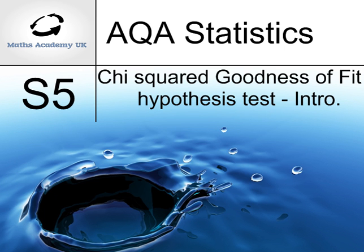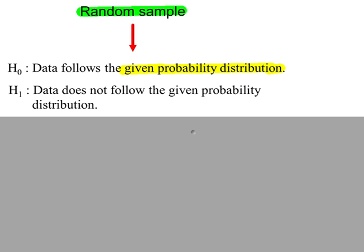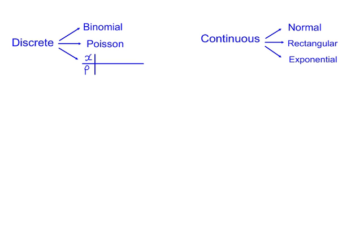An introduction to the chi-squared goodness-of-fit hypothesis test. We start with a random sample, and we're testing to see whether the data follows some given probability distribution. We may be testing for the discrete distributions — binomial, Poisson, or just some probability table. Or for continuous data, does our random sample fit a normal distribution, rectangular, or an exponential distribution?